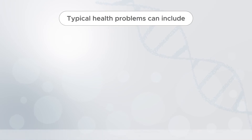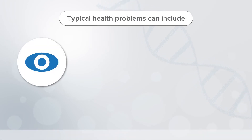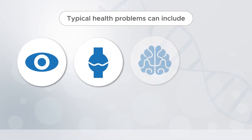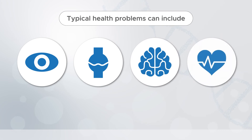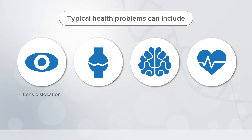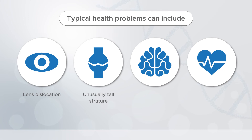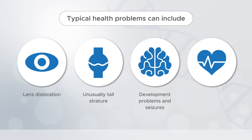The parts of the body most commonly affected are the eyes, skeleton, brain, and blood vessels. Health problems characteristic of this form typically include lens dislocation — often the first symptom noticed — unusually tall stature with long slender fingers, toes, arms, and legs, as well as developmental problems, seizures, and blood clots.